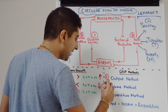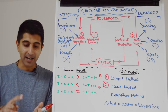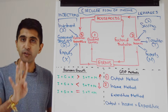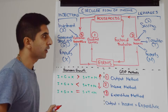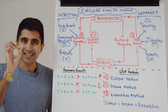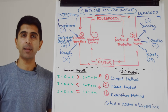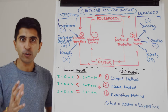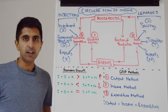Method two is the income method: adding up all factor incomes earned in an economy in a year — all wages and salaries, profit, interest, and rent. Method three is the expenditure method: adding up total expenditure on a country's goods and services in a year. That's consumer expenditure plus investment plus government spending plus net exports: C + I + G + (X − M). This is also the equation for aggregate demand. All three methods give us GDP.